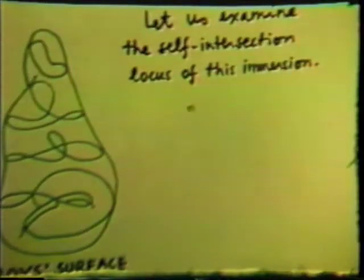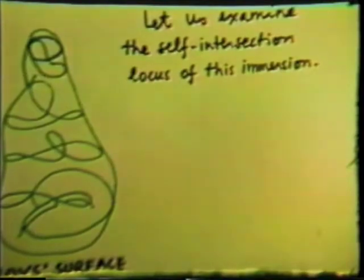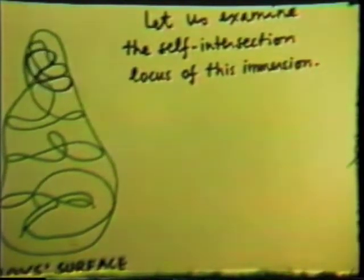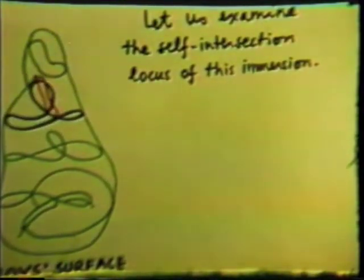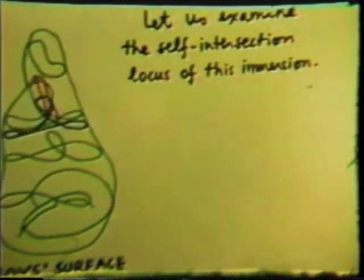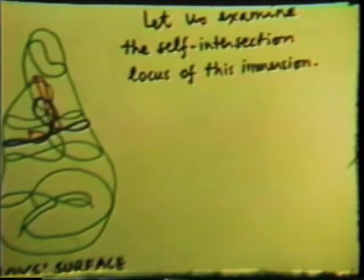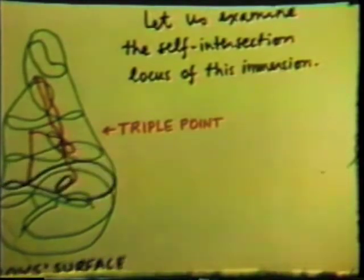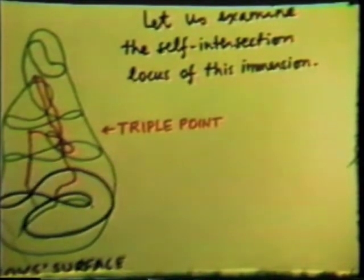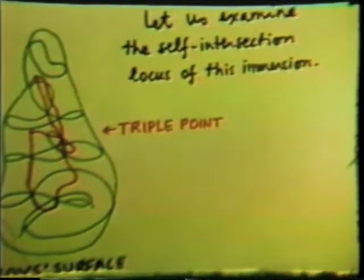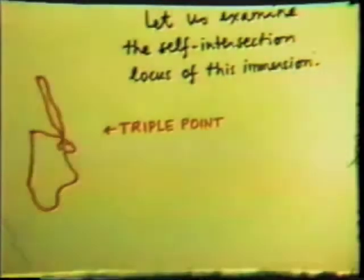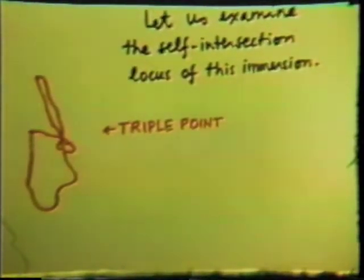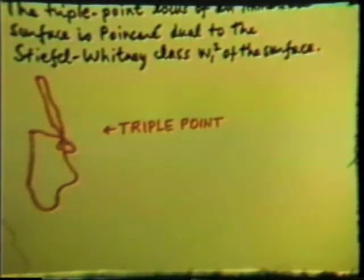Let's examine the self-intersection locus of this immersion. A plane is moving down through the surface, intersecting it in a blue curve. The self-intersection locus shows up in red. There's a triple point.